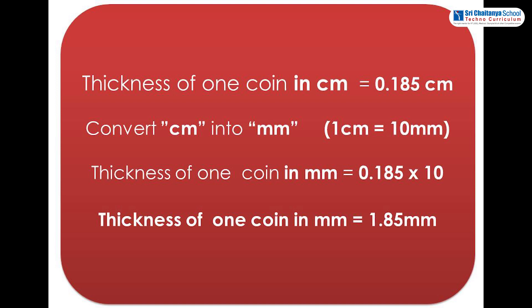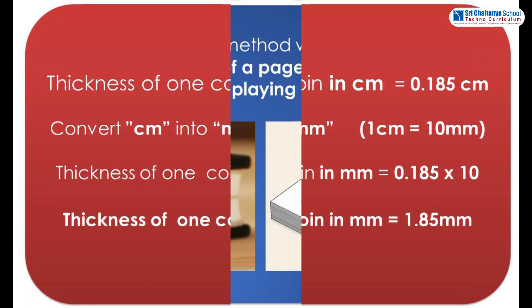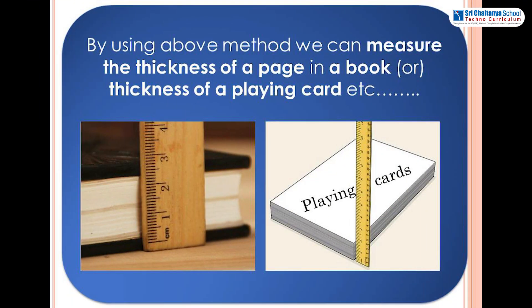Convert centimeters into millimeters. One centimeter equals 10 millimeters. Thickness of one coin in millimeters equals 0.185 times 10, which equals 1.85 millimeters. By using the above method, we can measure the thickness of a page in a book or thickness of a playing card.